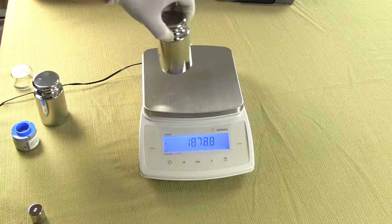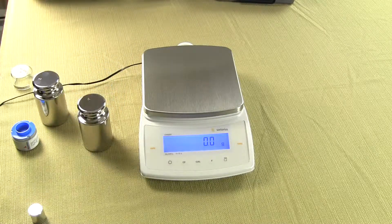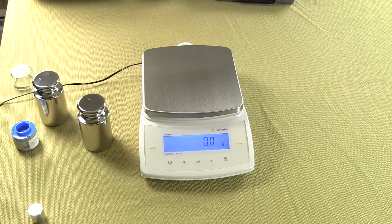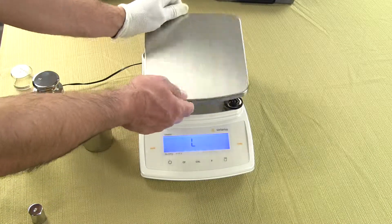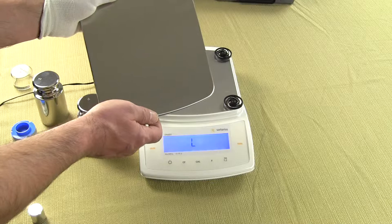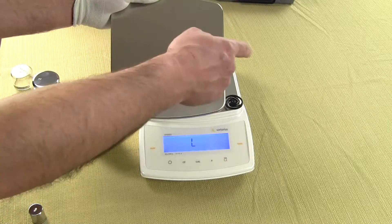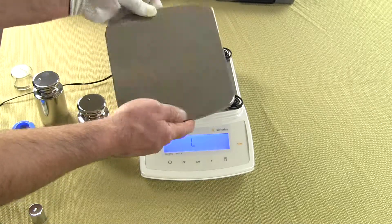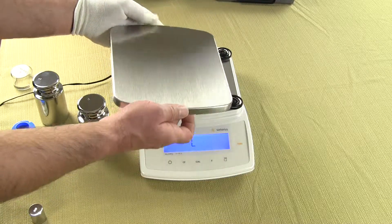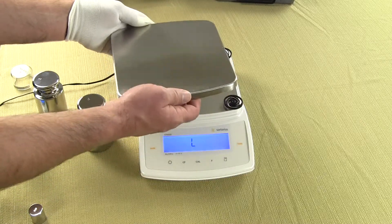The balance has a nice large stainless steel platform. This particular platform here is seven and a half inches by eight inches. So you have seven and a half by eight inches. So it's a very large stainless steel platform. Removable so you can clean it.